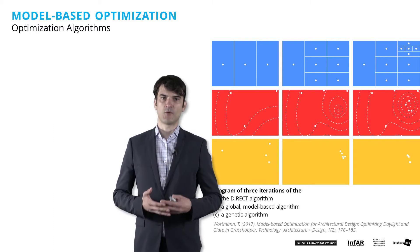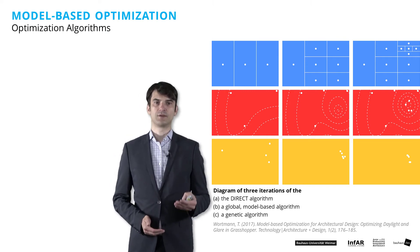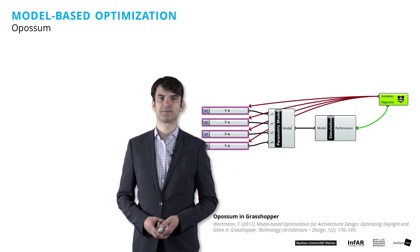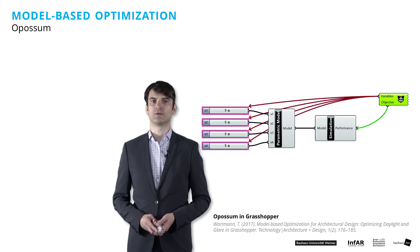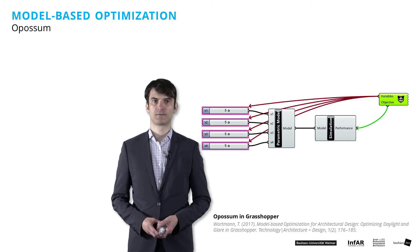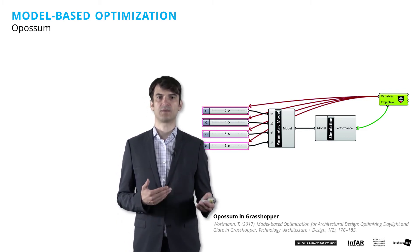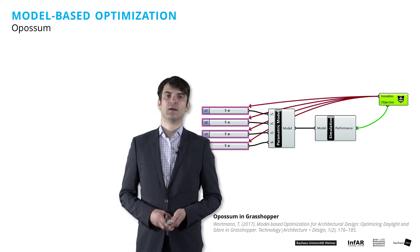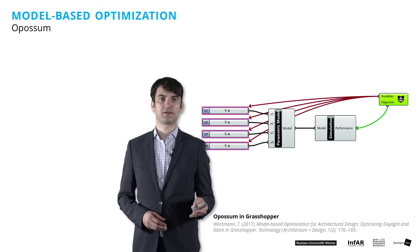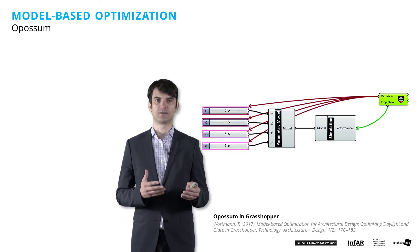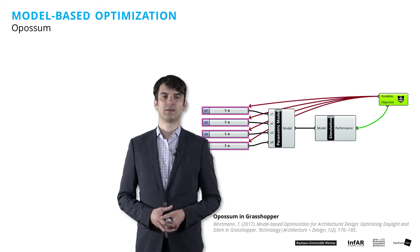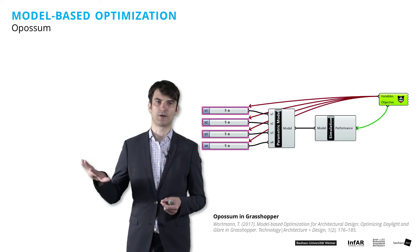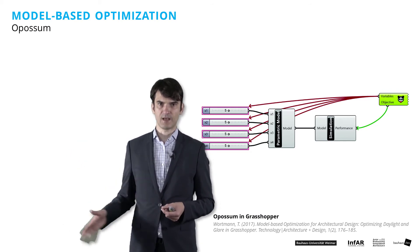We use this algorithm through a component in Rhino Grasshopper called Opossum, the optimization tool, presented here in the slide. It looks very similar to the optimization component Galapagos that we've already used. This component interpolates the design space with a machine learning technique called radial basis functions. The global model-based methods are particularly efficient for optimization problems with time-intensive simulations, and can also cover complex relationships between design parameters and the objectives or fitness function.